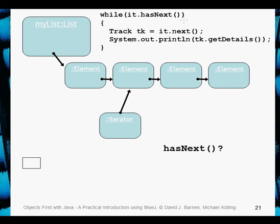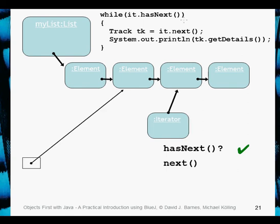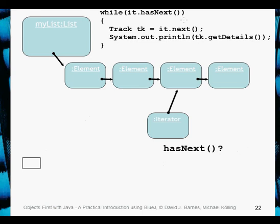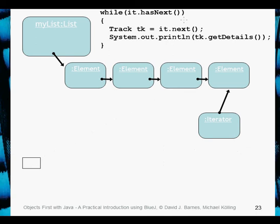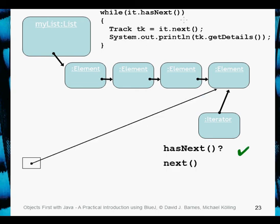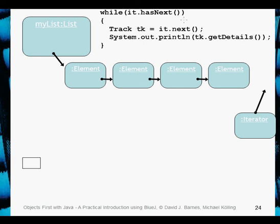Now we're pointing at the second element in the list, index 1. Is there one there? Yes there is, so it moves into the while loop again. We assign our local variable 'tk' using the next method, which again moves the iterator on to the next element. We continue through index 2 and so on, assigning our local variable each time. Finally, the iterator moves on to a position where there is no element - that returns false, and at that point the iteration ends.